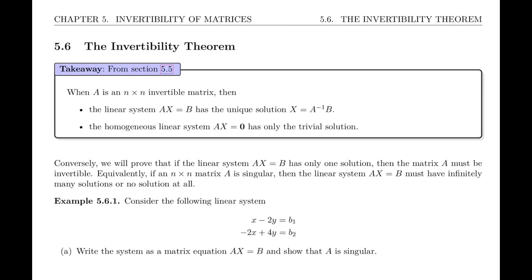Welcome to section 5.6, the Invertible Theorem. Let's start with the takeaway from the previous section, which was that if A is an n-by-n invertible matrix, then the linear system Ax equals b has the unique solution x equals A inverse times b — just one solution. And in particular, if it's a homogeneous linear system, then that unique solution will be the trivial solution.